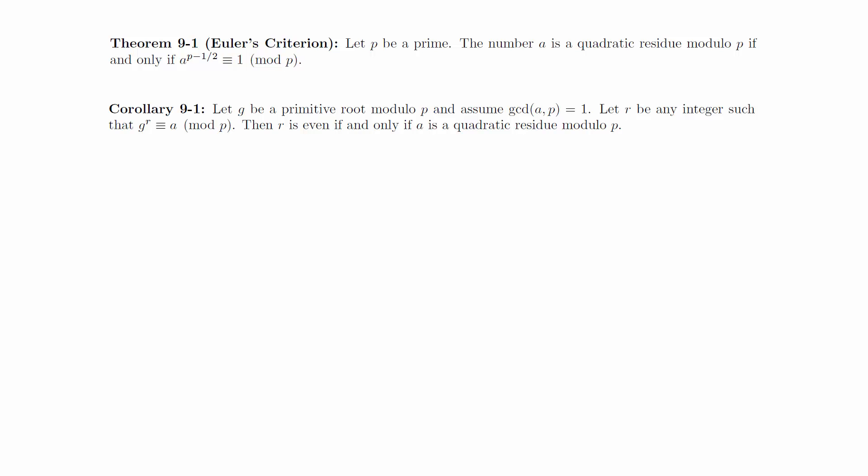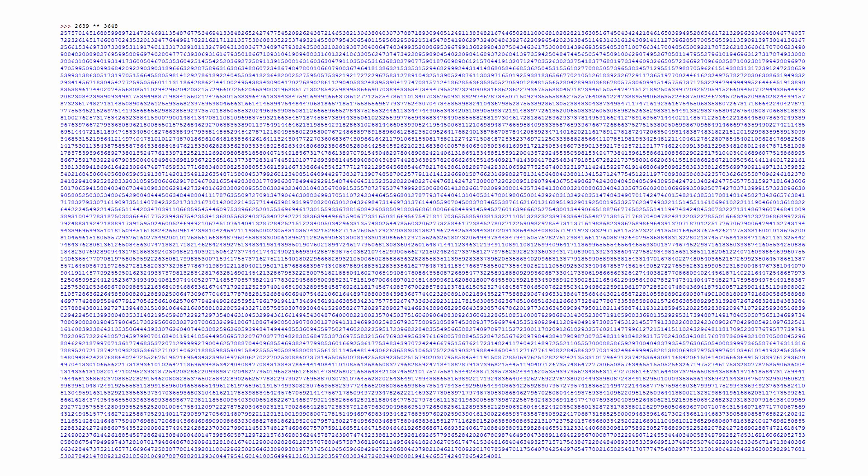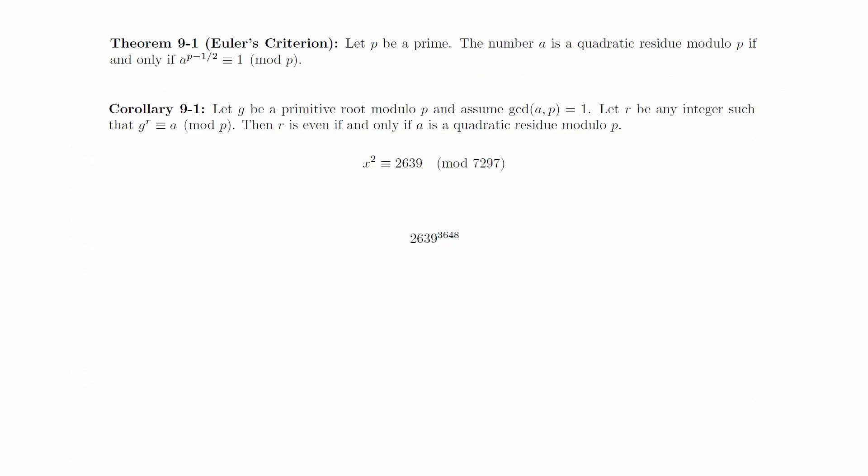The book doesn't discuss this, but there's a very real challenge in using Euler's criterion in practice. Let's say we wanted to know whether 2639 is a quadratic residue modulo 7297. This would require us to calculate 2639 to the 3648th power, which is a number that is nearly 12,500 digits long. So we need some technique for making these numbers more accessible. In class, we will discuss a method known as successive squaring which will make these values computable with just a basic calculator.